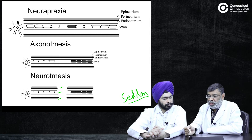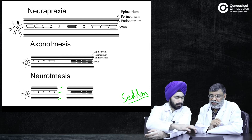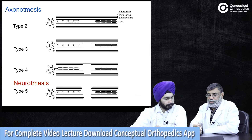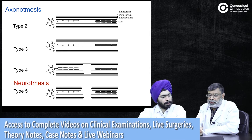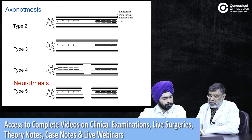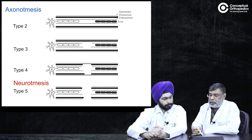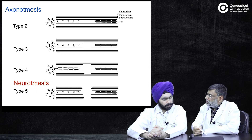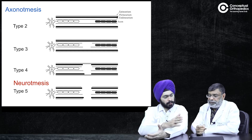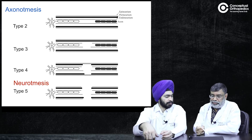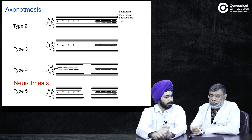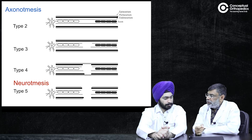In the Sunderland classification, neuropraxia is the same — there's just a block, that is type one. If only the axon is gone and endoneurium is still intact, that is type two — still axonotmesis. Then if the endoneurium is gone and perineurium is preserved, that is type three. And if the endoneurium and perineurium are gone but epineurium is preserved, this is type four. So type one is the same as Seddon's neuropraxia, and type five is the same as neurotmesis. It is in the axonotmesis where you get further grading.